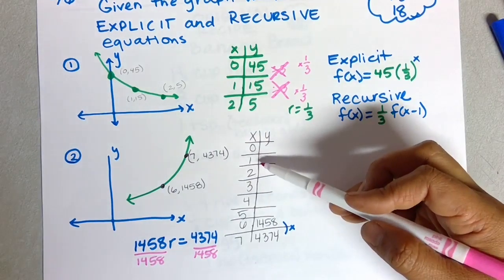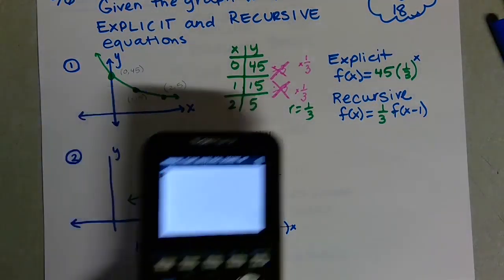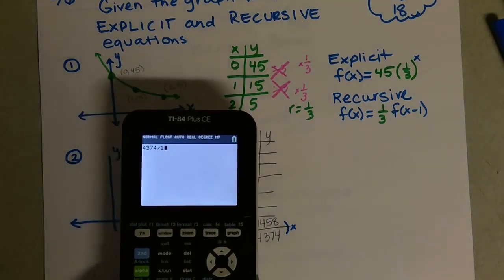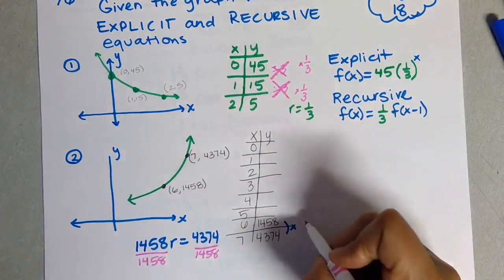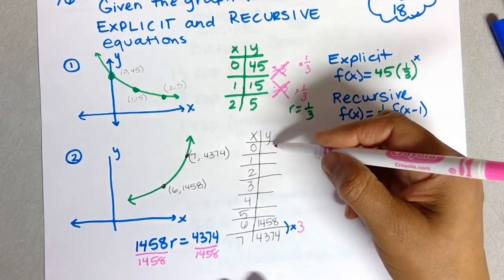If you had the first term and the fifth term, that doesn't work—it's only when you have terms that are right next to each other. I'm going to use my calculator: 4374 divided by 1458, and I get 3. That means this is being multiplied by 3 every time.